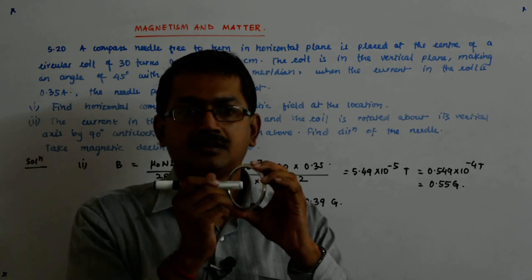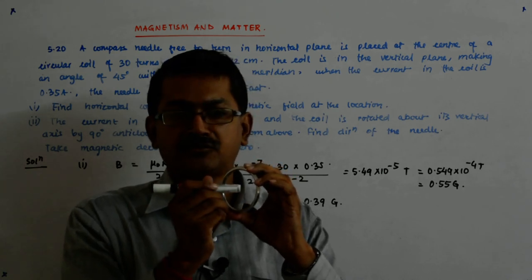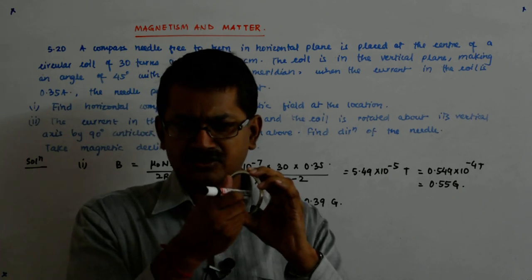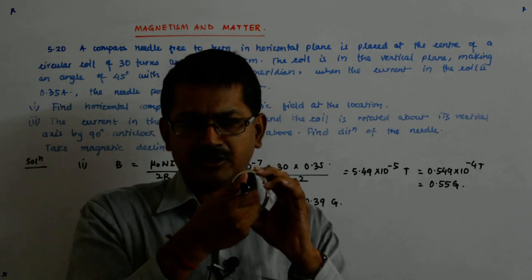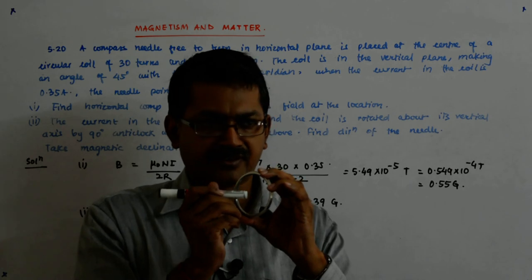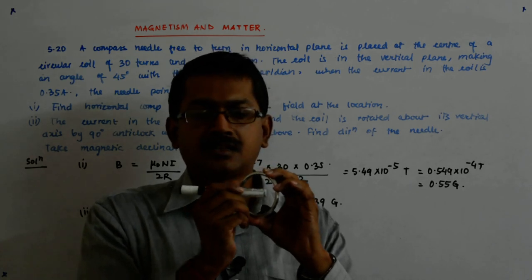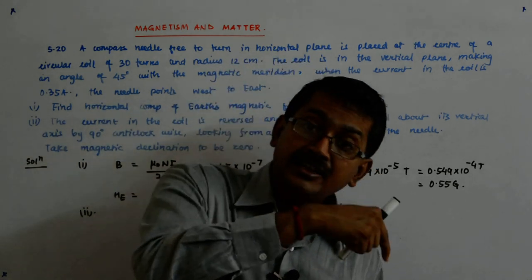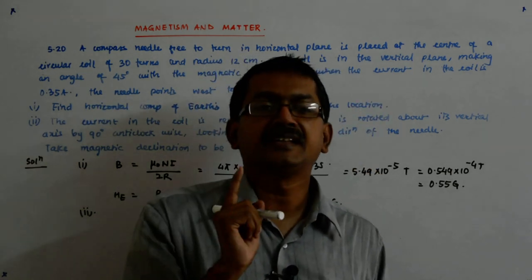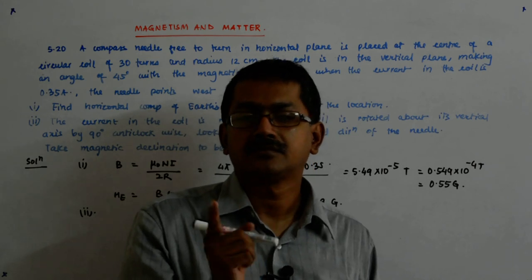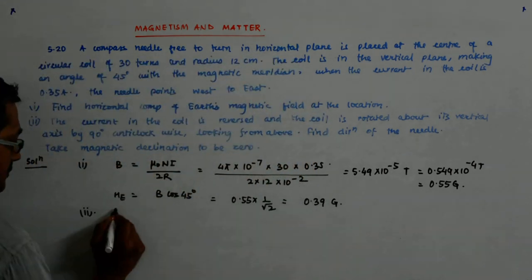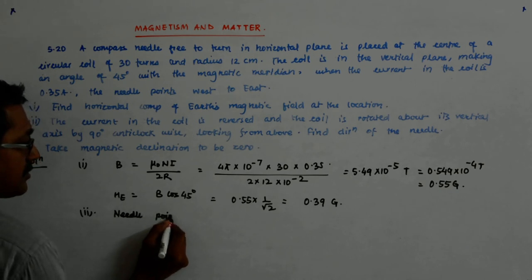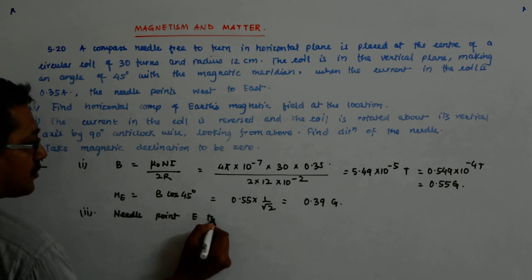So there is another 0.39 gauss of field that is now acting from east to west. So my needle starts pointing east to west. Needle points east to west.